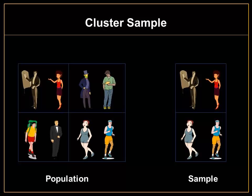Next, we have the cluster sample. With the cluster sample, the population is divided into clusters, and these clusters are basically ill-defined groups. You can think of clusters as counties in a state — counties are individual groups within the state, and within each group, all the individuals are different. When using a cluster sample, subjects are randomly selected based on clusters, and you would gather entire clusters to be a part of the sample. So you have your entire population divided into clusters, and then you randomly select entire clusters to be a part of the sample.